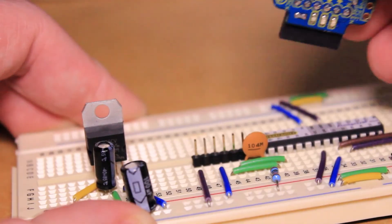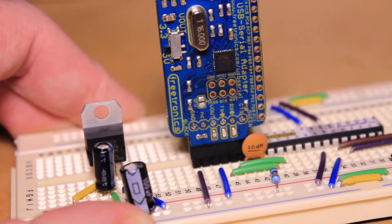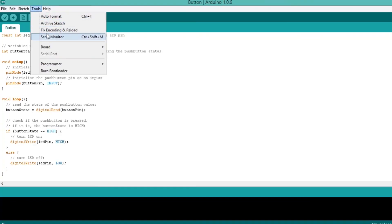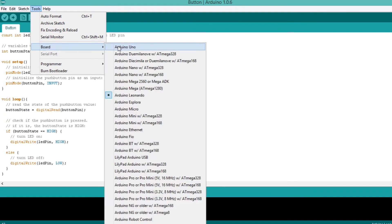To program the board, connect the USB to serial adapter to a computer using the USB cable. Then open up the Arduino IDE, select the Arduino UNO board, and upload your sketch.